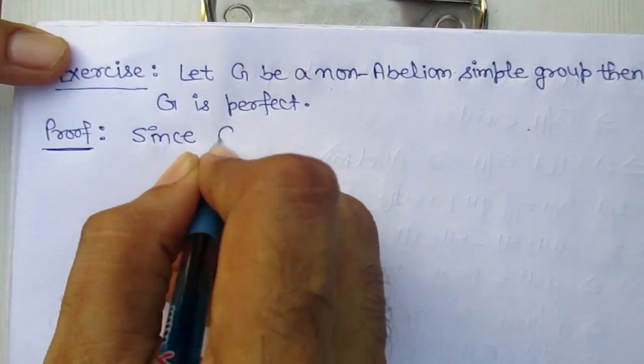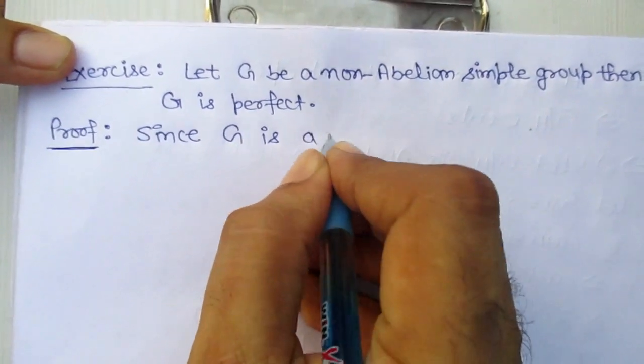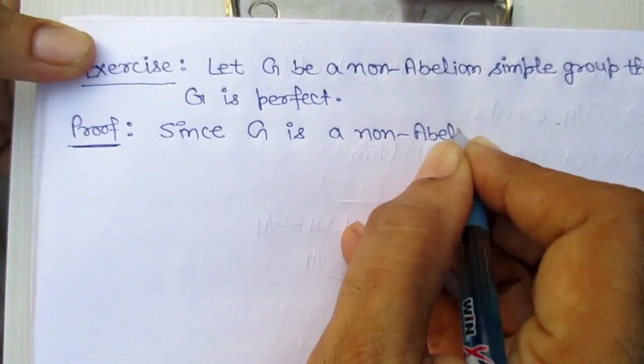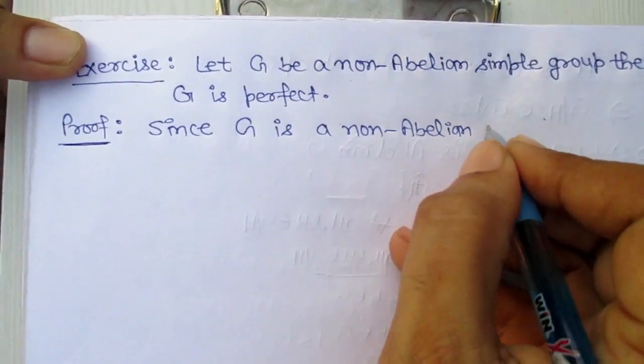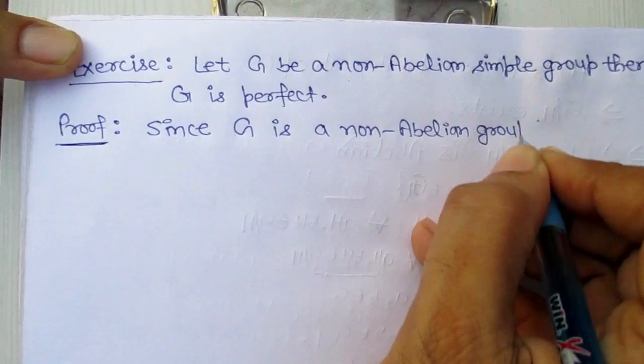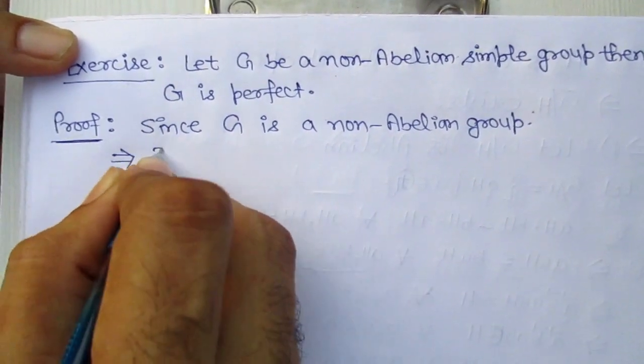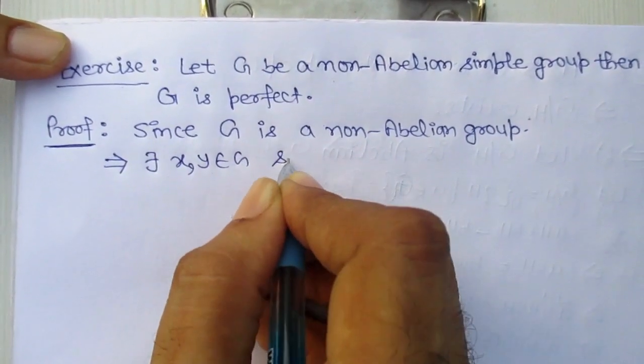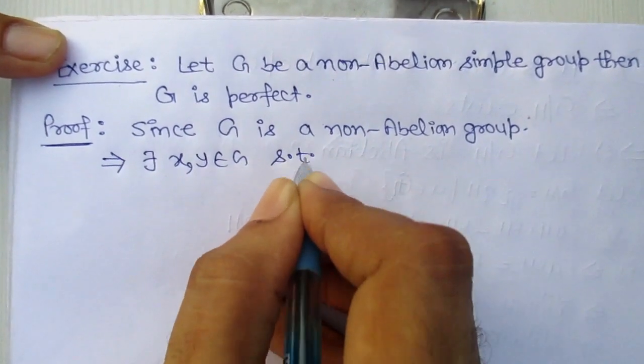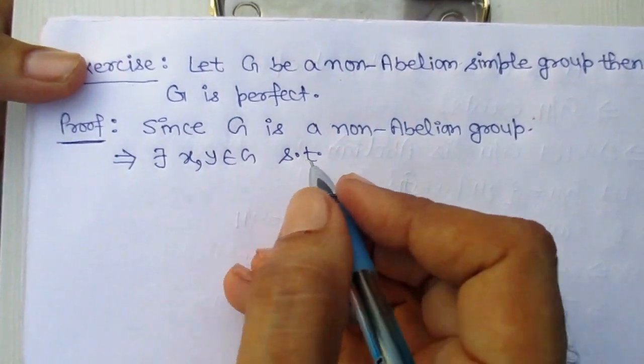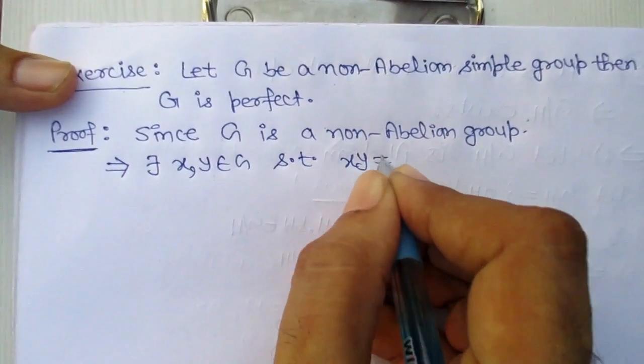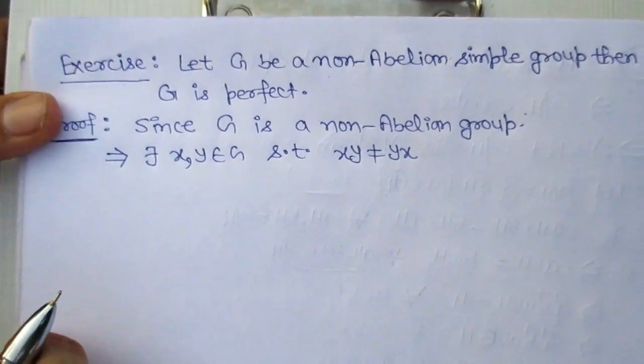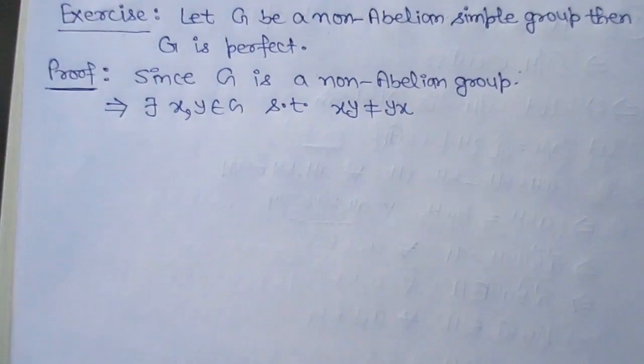Proof: Since G is a non-abelian group, it implies there exist two elements in G such that xy is not equal to yx. Because it's non-abelian, we'll find at least two elements that don't commute.